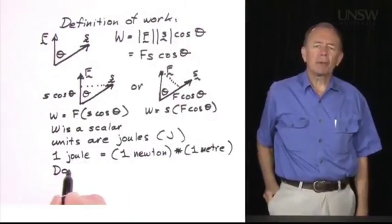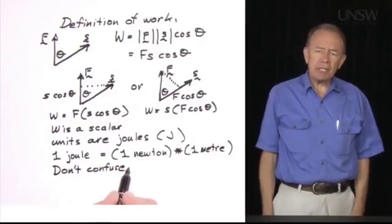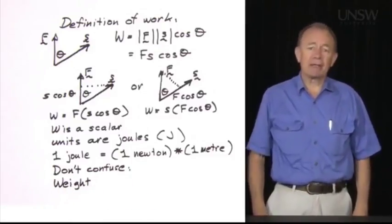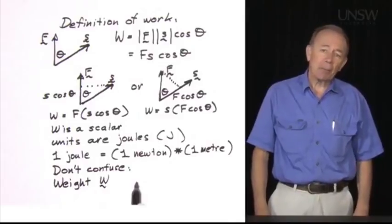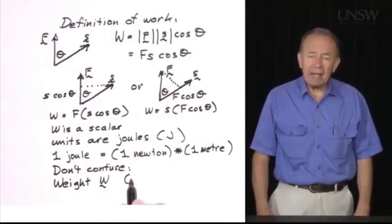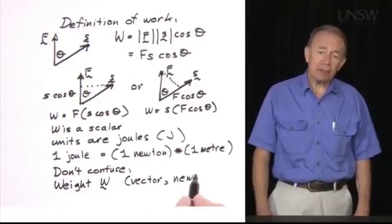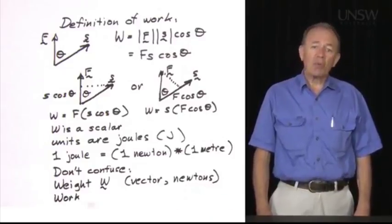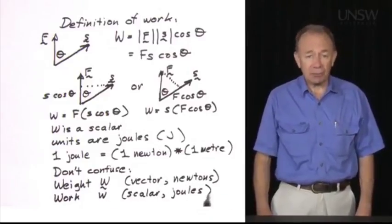But first, something that requires care. We use the letter W for both work and weight. Usually we can tell them apart easily because weight is a vector and its units are Newtons. Work is a scalar and its units are joules.